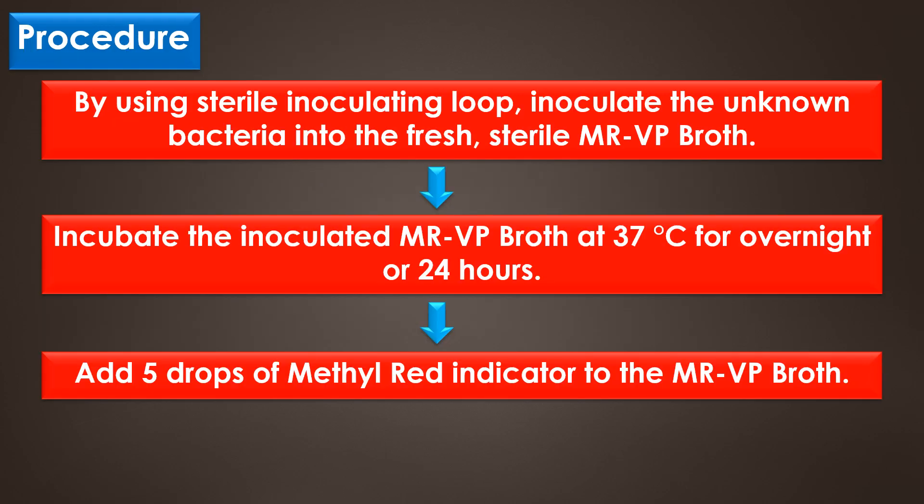The procedure: using a sterile inoculation loop, inoculate the unknown bacteria into fresh sterile MRVP broth. Incubate the inoculated MRVP broth at 37°C overnight or for 24 hours. After incubation, obtain the broth from the incubator and add 5 drops of methyl red indicator to the MRVP broth. A positive reaction is indicated if the color of the medium changes to red within a few minutes.